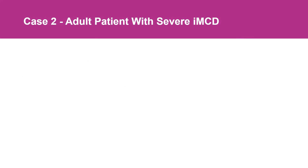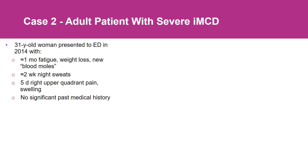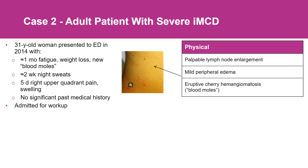I'd like to present a case of Castleman disease that can really help bring this disease to life. We've got a 31-year-old female who presents to the emergency department with a month of fatigue, weight loss, and what she described as new blood moles, about a two-week history of night sweats, with five days of quite severe right upper quadrant pain, swelling around the ankles, but really no significant past medical history. On physical exam, there was cervical and axillary lymphadenopathy, mild peripheral edema around the ankles, and blood moles on this patient's chest and shoulders.